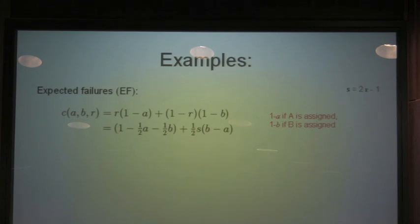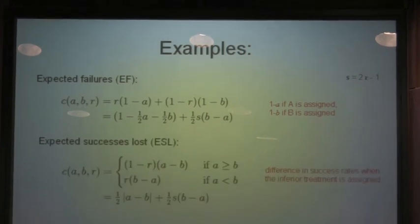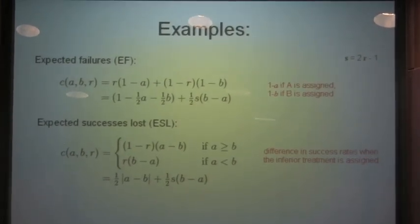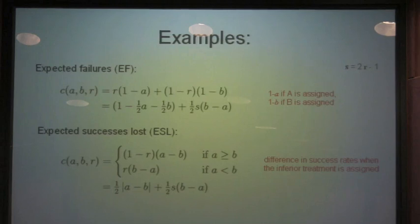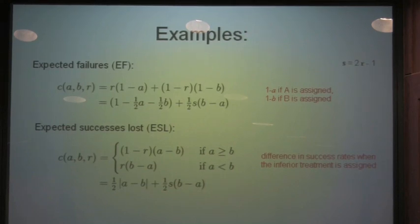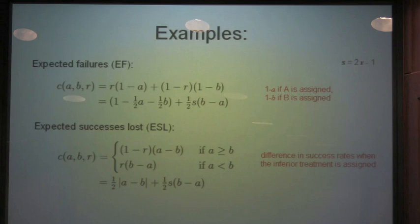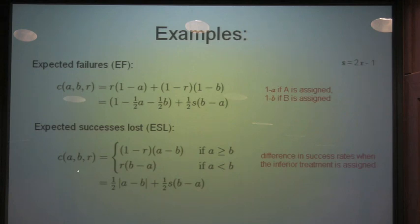Now in the literature, I think not in a very sophisticated part of the literature, you find people criticizing expected failures, and proposing instead a more sophisticated metric, which is expected successes lost. And the idea is just, what if there isn't a good treatment for this disease? What if A and B are both kind of bad? Then you're costing them for things that are sort of beyond their control. In expected failures, you're costing them for the failures that either one of them would have had. And shouldn't you instead cost expected successes lost?